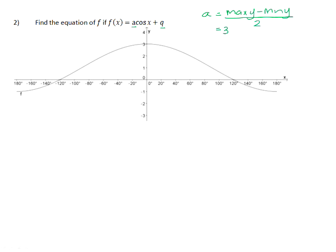So the maximum y is 3, the minimum y here is negative 1. So that will be 3 plus 1, minusing negative 1 is the same as adding 1. 3 plus 1 is 4, 4 divided by 2 is 2. So we already know that the a value is 2.